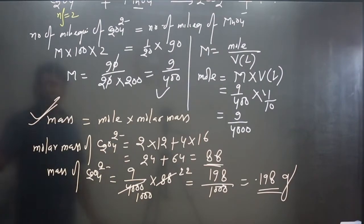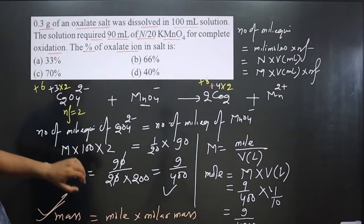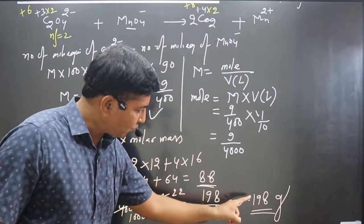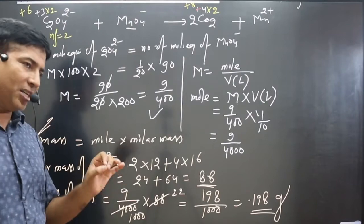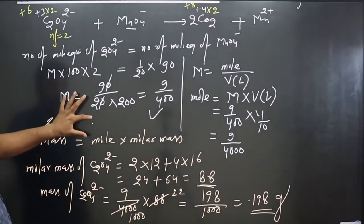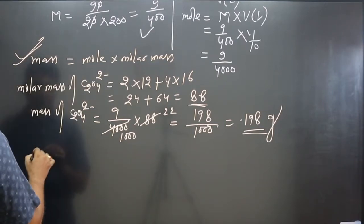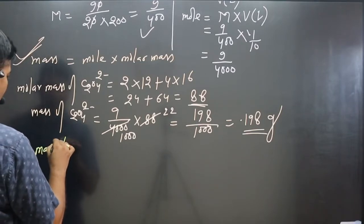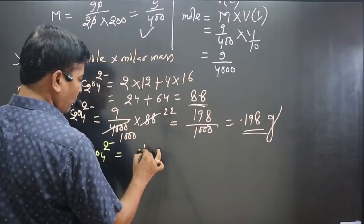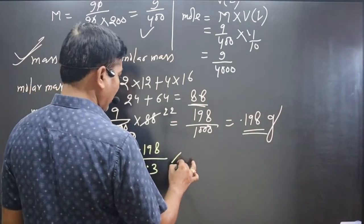Total mass of oxalate salt is 0.3 gram. Mass of oxalate ion present is 0.198 gram. Mass percentage of oxalate ion = (mass of oxalate ion / total mass) × 100 = (0.198 / 0.3) × 100.